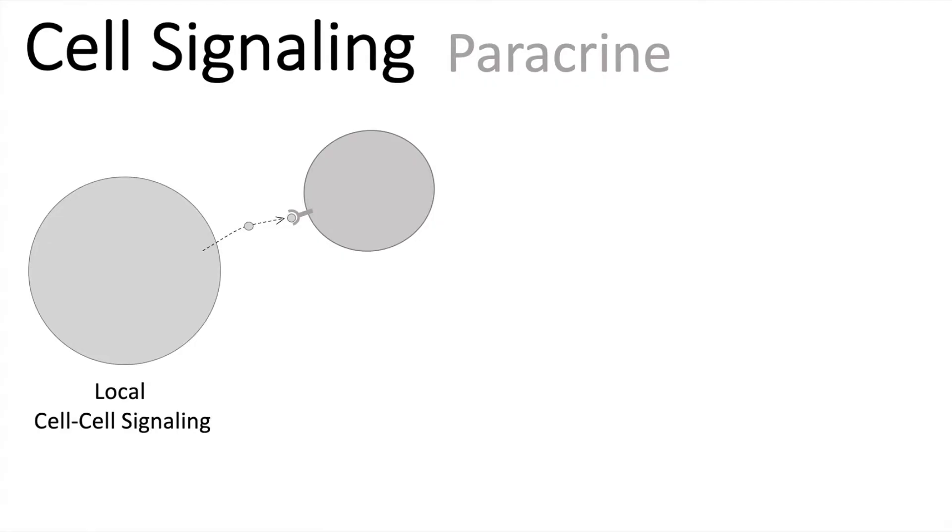The signaling molecules released by the donor cell here, they can't travel over a long distance. An example for paracrine signaling might be the expression of VEGF, the vascular endothelial growth factor. They are secreted and the surrounding cells with the specific receptors can then initiate angiogenesis.